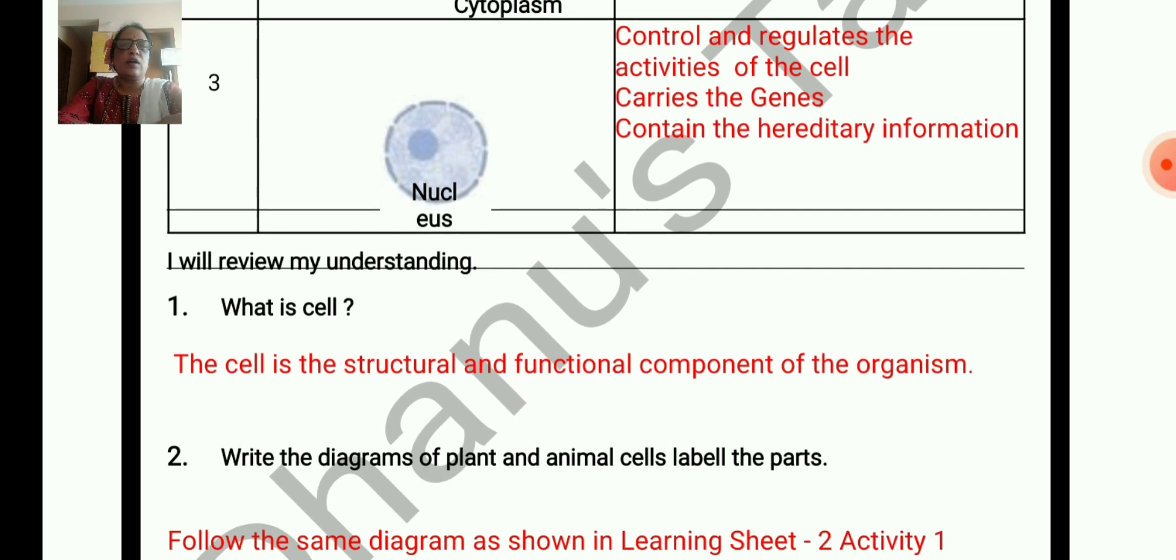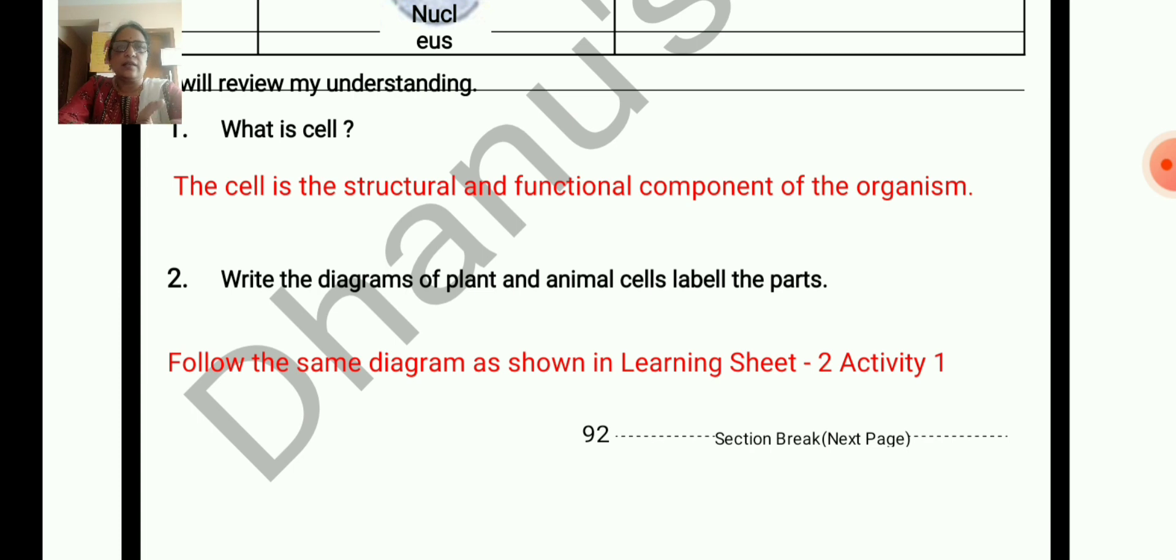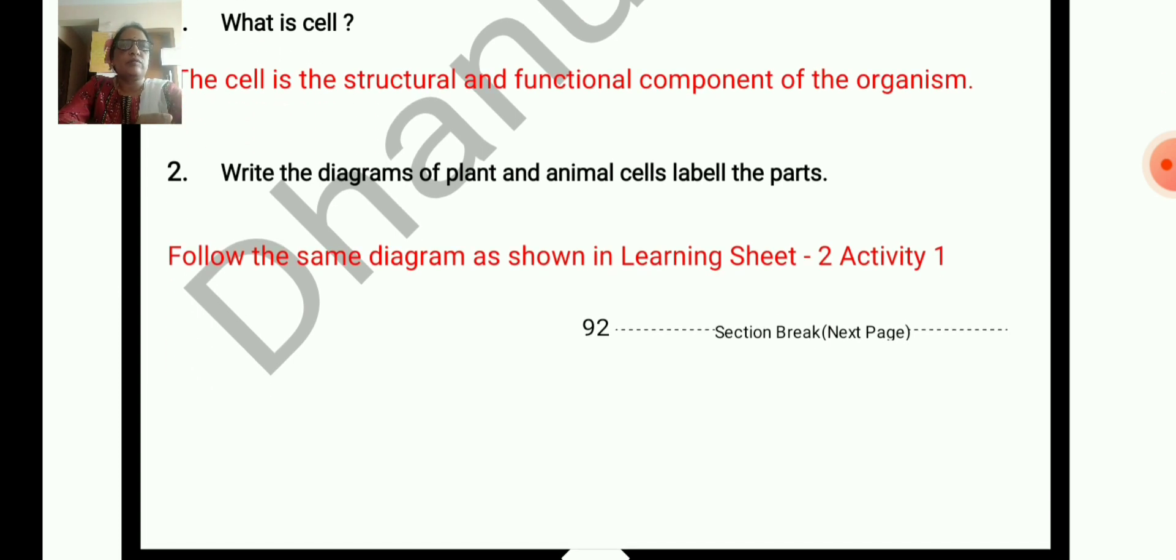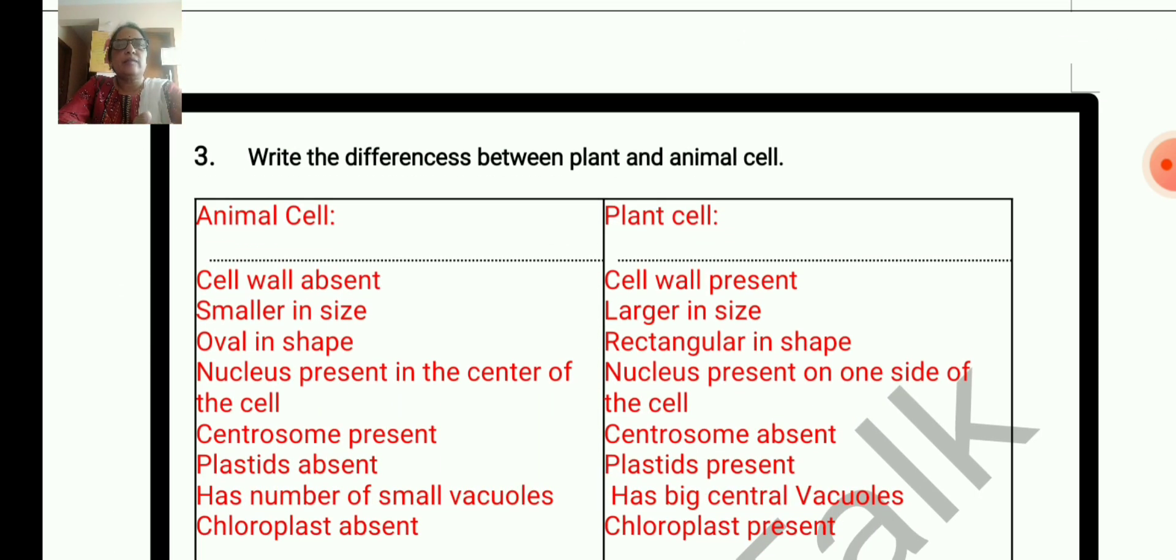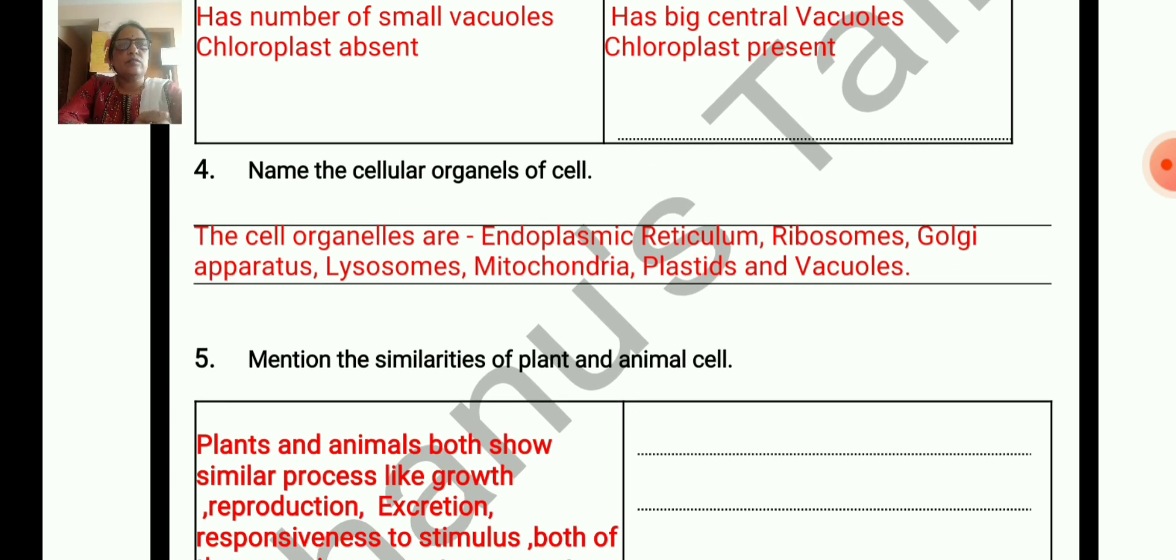Now I will review my understanding. What is a cell? The cell is the structural and functional component of the organism, or you can write the cell is a structural and functional unit of a living organism. Write the diagram of plant and animal cells and label the parts. You can copy and paste the cells. Write the difference between plants and animal cells. Name the cellular organelles of cell. It is a tiny cellular structure performing a specific function within the cell. So cellular organelles are endoplasmic reticulum, ribosome, Golgi apparatus, lysosome, mitochondria, plastids and vacuoles.